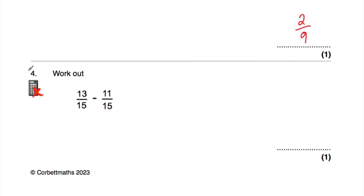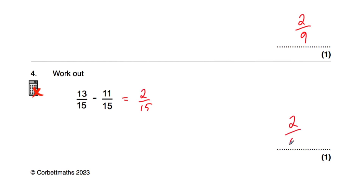Let's have a look at question number four. Question number four says: work out 13 fifths subtract 11 fifths. Well, if we had 13 fifths and we took away 11 of those fifths, we'd be left with two fifths. Because both fractions have the same denominator, we can just do 13 take away 11, that's equal to two, so the answer is two fifths.